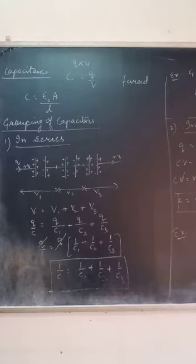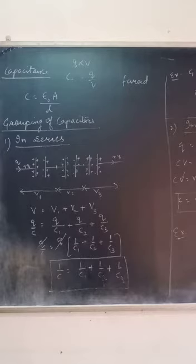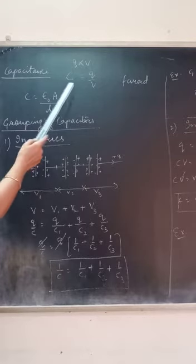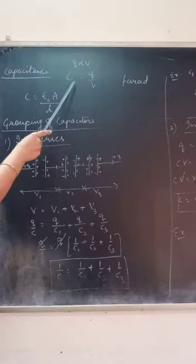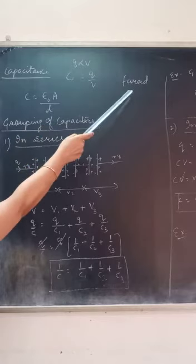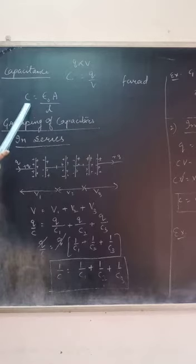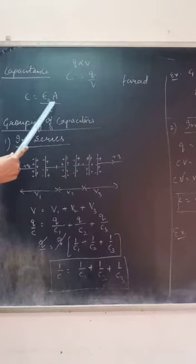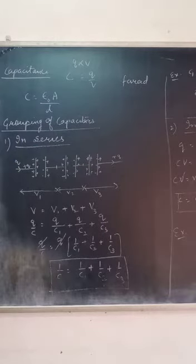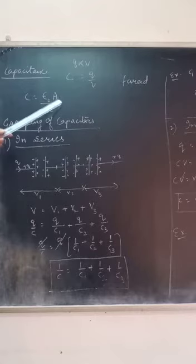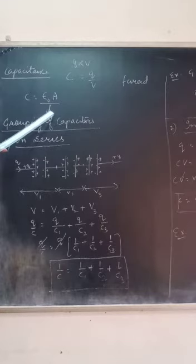In a small space, we can store a lot of charge. What is the value of C? The S.I. unit is the farad. We have the capacitance formula for a parallel plate capacitor: C = ε₀ A/D, where ε₀ is the permittivity, A is the area of each plate, and D is the distance between the two plates.